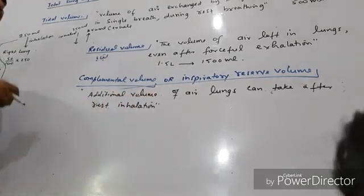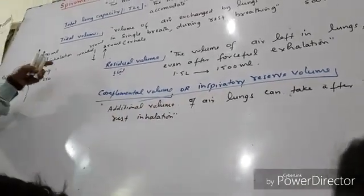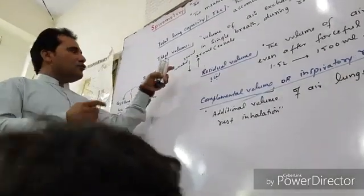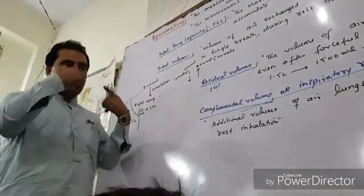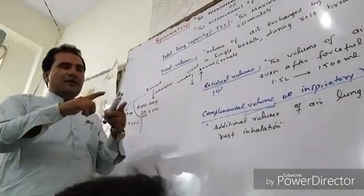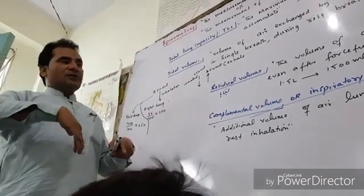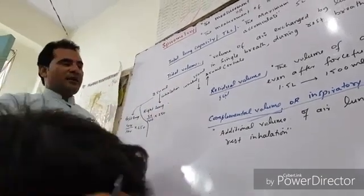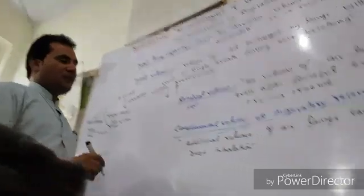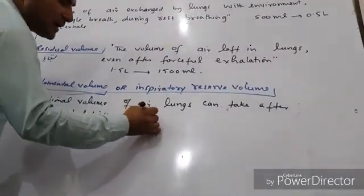If I had normal breathing inhalation — 5 liters already — 500 mL water is already in, so the inspiratory reserve volume is about 3,000 mL.